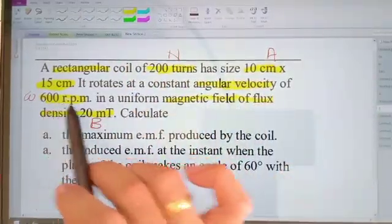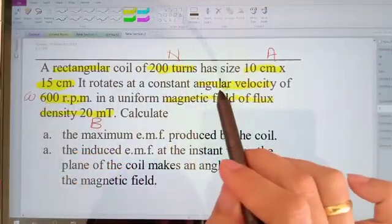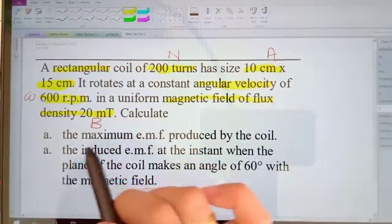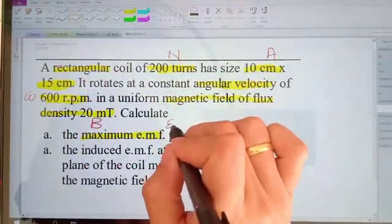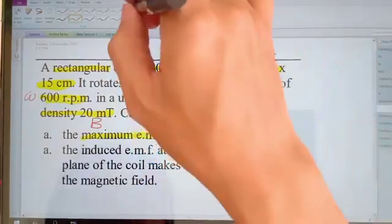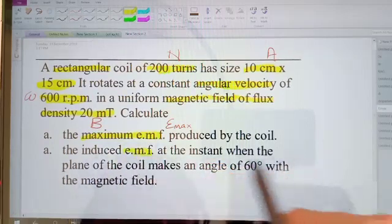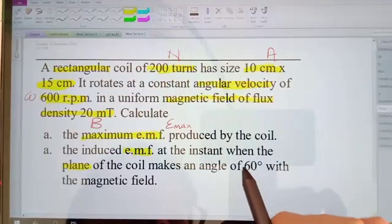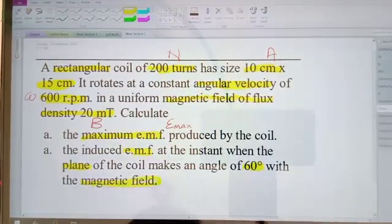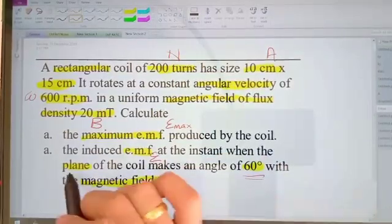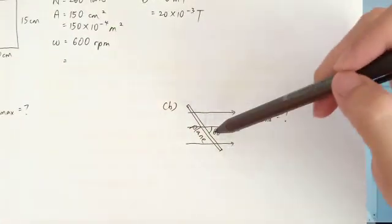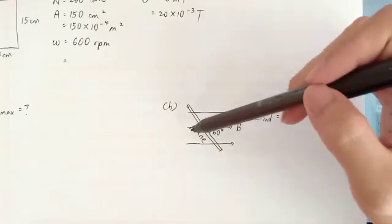So what's changing here is the angle theta, because there is rotating with angular velocity. So part A, he asks for the maximum EMF produced by the coil. So he asks for the E max, maximum EMF. Secondly, part B, he asks for the EMF also at the instant when the plane of the coil makes an angle of 60 degree with the magnetic field. So find the EMF when the plane is 60 degree with the magnetic field. This is the plane, and this is the magnetic field, 60 degree. That's the questions.